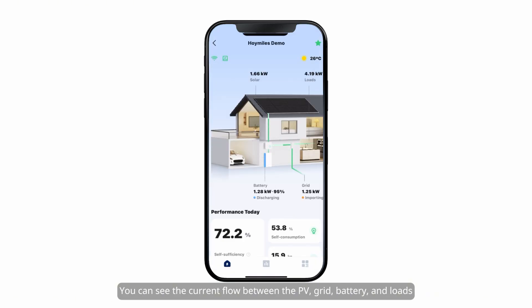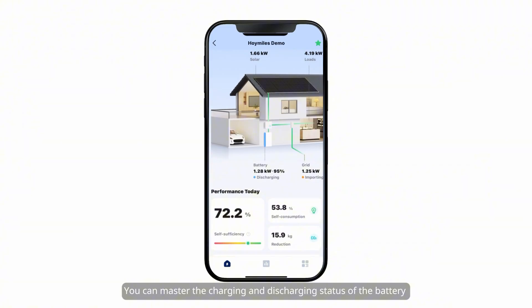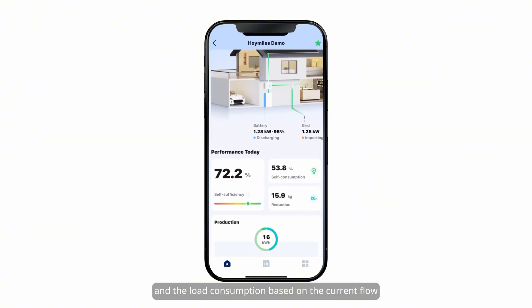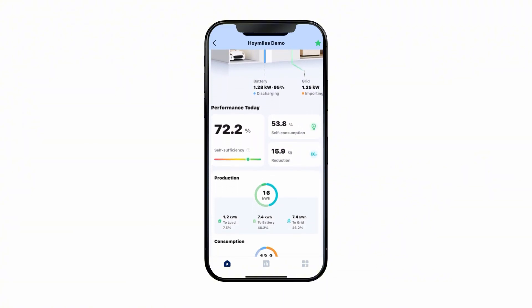You can see the current flow between the PV, grid, battery, and loads. You can also see the battery SOC below the battery icon. You can master the charging and discharging status of the battery and the load consumption based on the current flow.